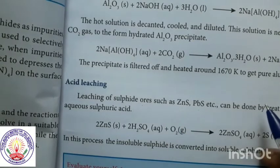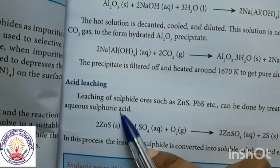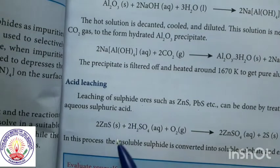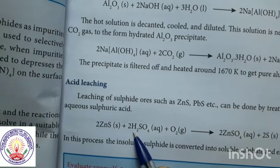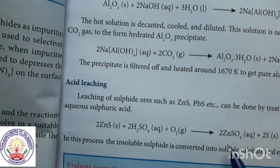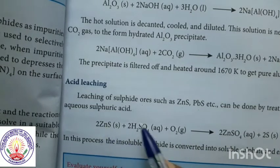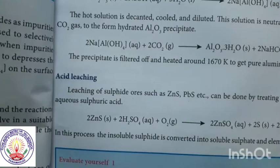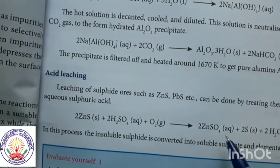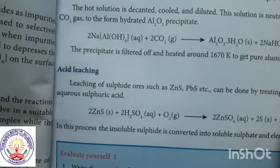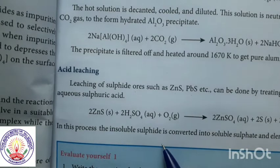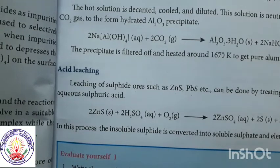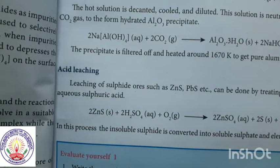These sulphide ores can be treated with H2SO4 — sulphuric acid. Zinc blende is treated with hot concentrated H2SO4 with O2; zinc combines with sulphate to form zinc sulphate, and sulphur plus water are produced. In this process, the insoluble sulphide is converted into soluble sulphate and elemental sulphur.